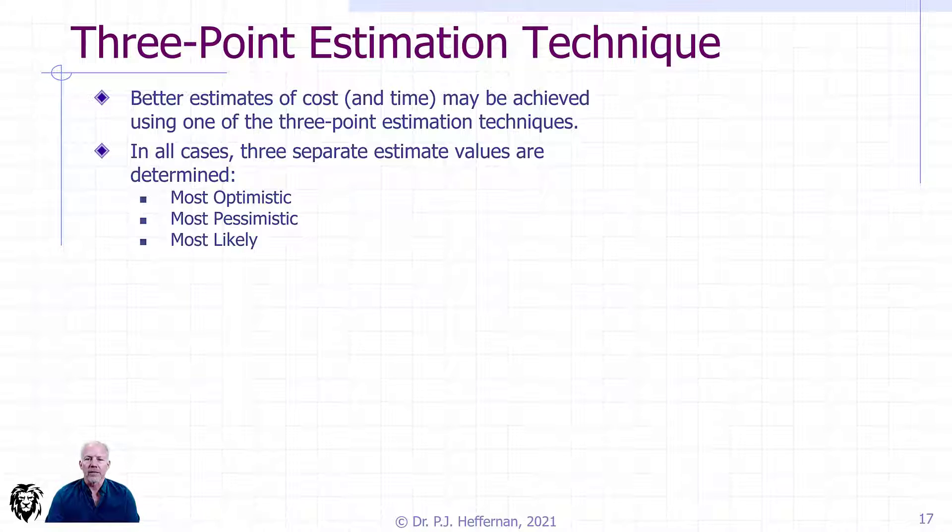Similarly, the most pessimistic is where you assume unfavorable outcomes on a number of things. It is a realistic worst case scenario, whereas the most optimistic is the realistic best case scenario.